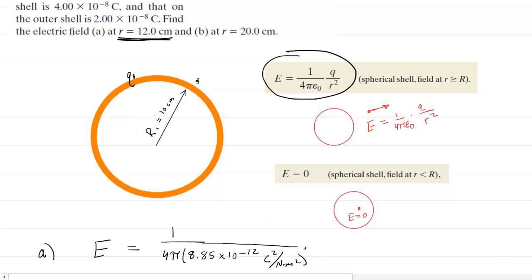And then we'll multiply this by the amount of charge on that inner shell, and that was given in the problem as 4 × 10^-8 coulombs, and then divided by the distance squared.